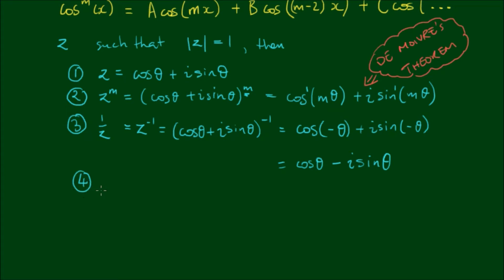And for equation 4, if we raise the inverse to the mth power, which equals 1 on z to the mth power or z to the negative mth power, we have cosine of negative m theta plus i sine of negative m theta, which of course is equal to cosine m theta minus i sine of m theta.